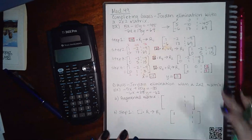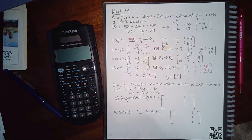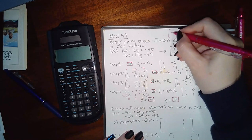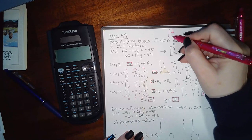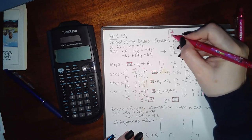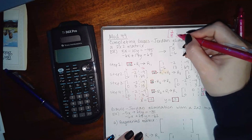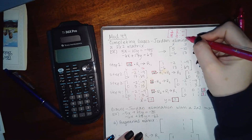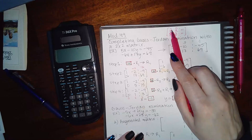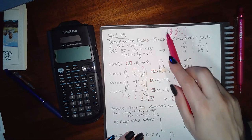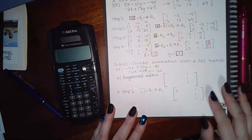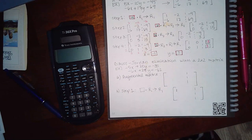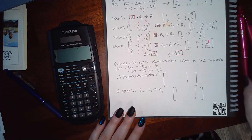Now we're going to work on what's called Gauss-Jordan elimination. The goal is to turn the top-left position into a 1 first, then use that to turn the position below it into a 0, then go to the next diagonal position and turn it into a 1, then turn the position above it into a 0. Whatever you end up with over here will become your solutions. You have to go in order — 1, 0, 1, 0 going around like a U. If you don't go in that order, you'll end up going in circles.